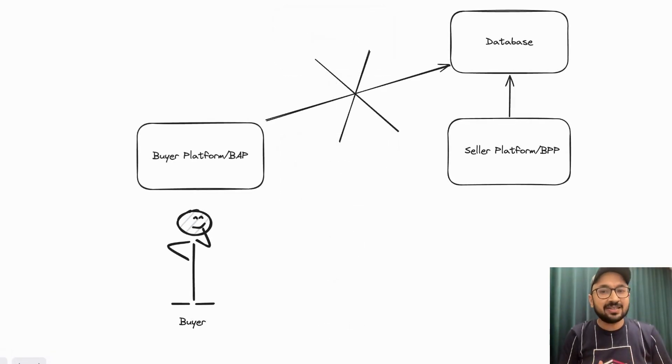To understand this, let's now get into what a BAP is. BAP is a Beckon application platform or a buyer platform. Imagine it is a platform allowing people to buy products on the ONDC network. The goal of BAP is to allow the buyer to buy a cake or a product from BPP. But the product is still in the seller's database. How does it reach the buyer?